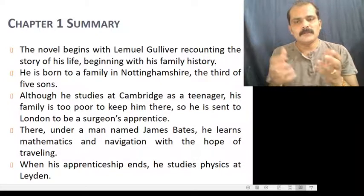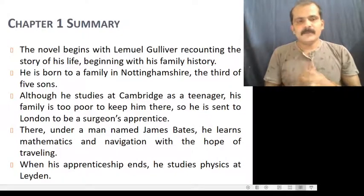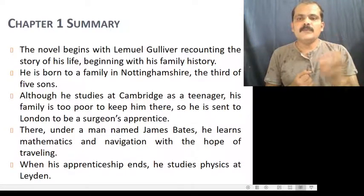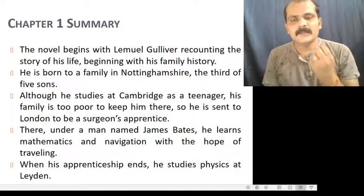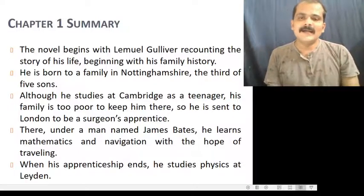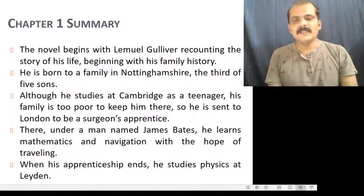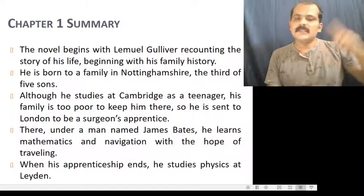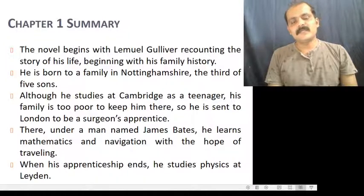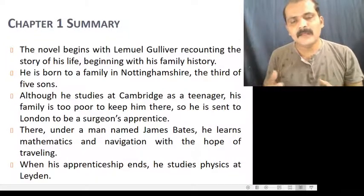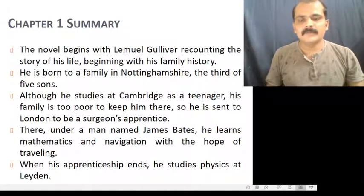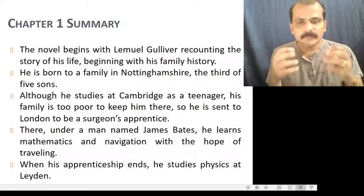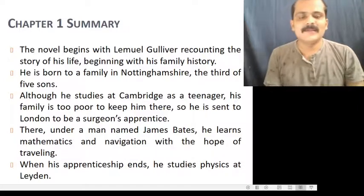Lemuel Gulliver, the hero of the novel, is born to a family in Nottinghamshire, the third of five sons. Although he studied at Cambridge as a teenager, his family is too poor to keep him there. So he is sent to London to be a surgeon's apprentice under a man named James Bates.